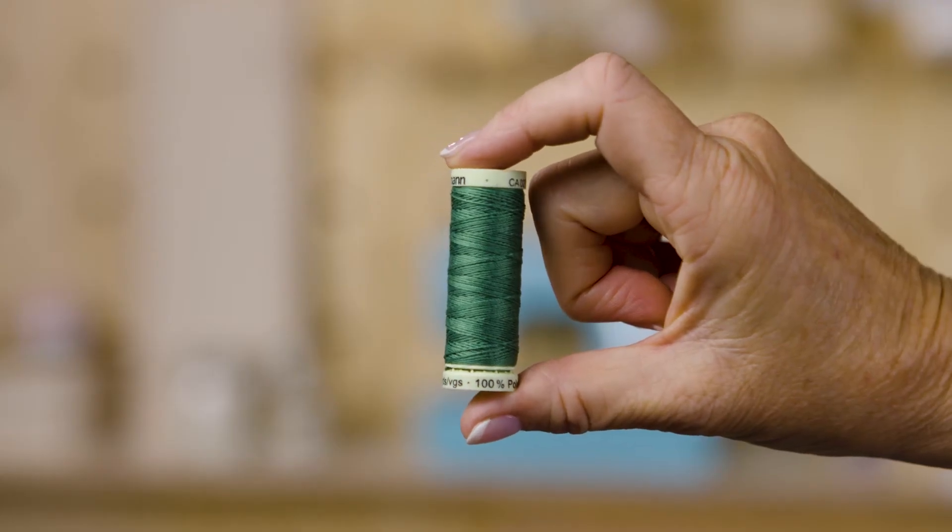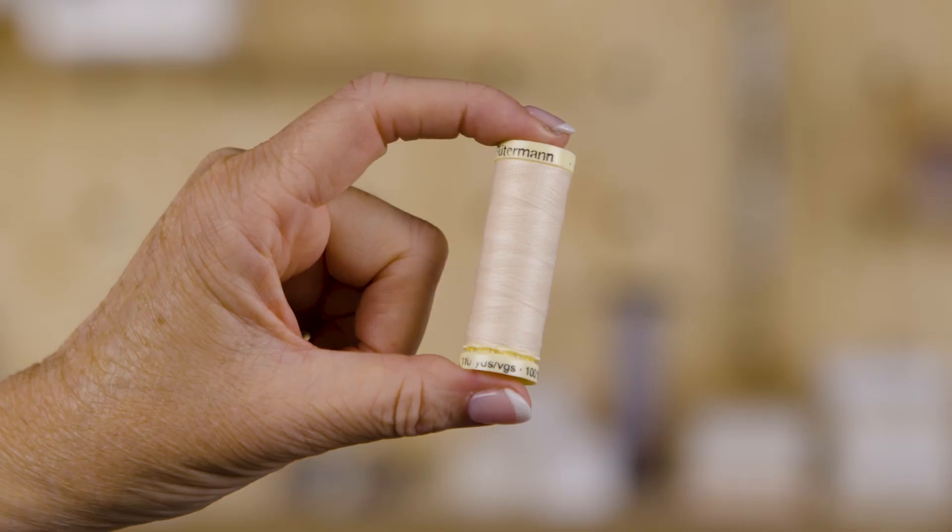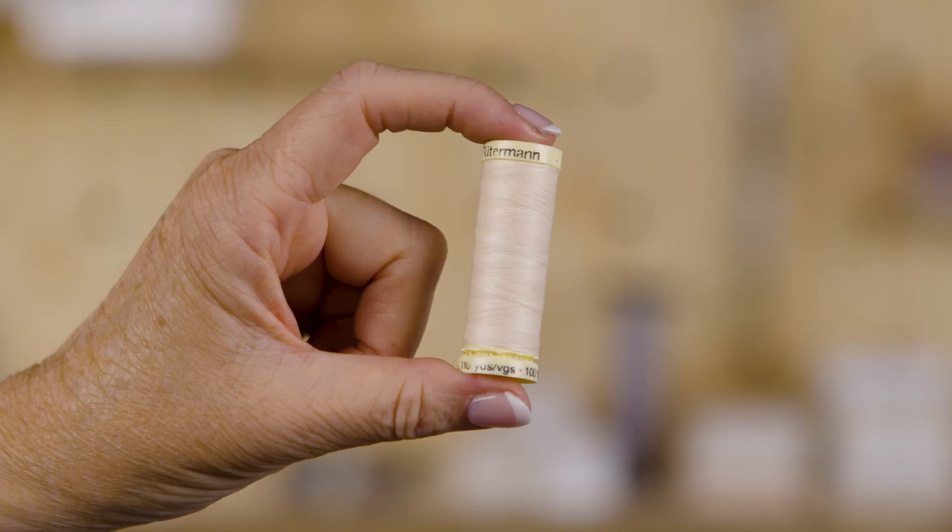The thickness of the thread can change the final outcome of your project. Thicker threads are stronger but can create a bulky finish if you use it on the wrong fabric. Thinner threads are more delicate, so good when you want a fine finish.